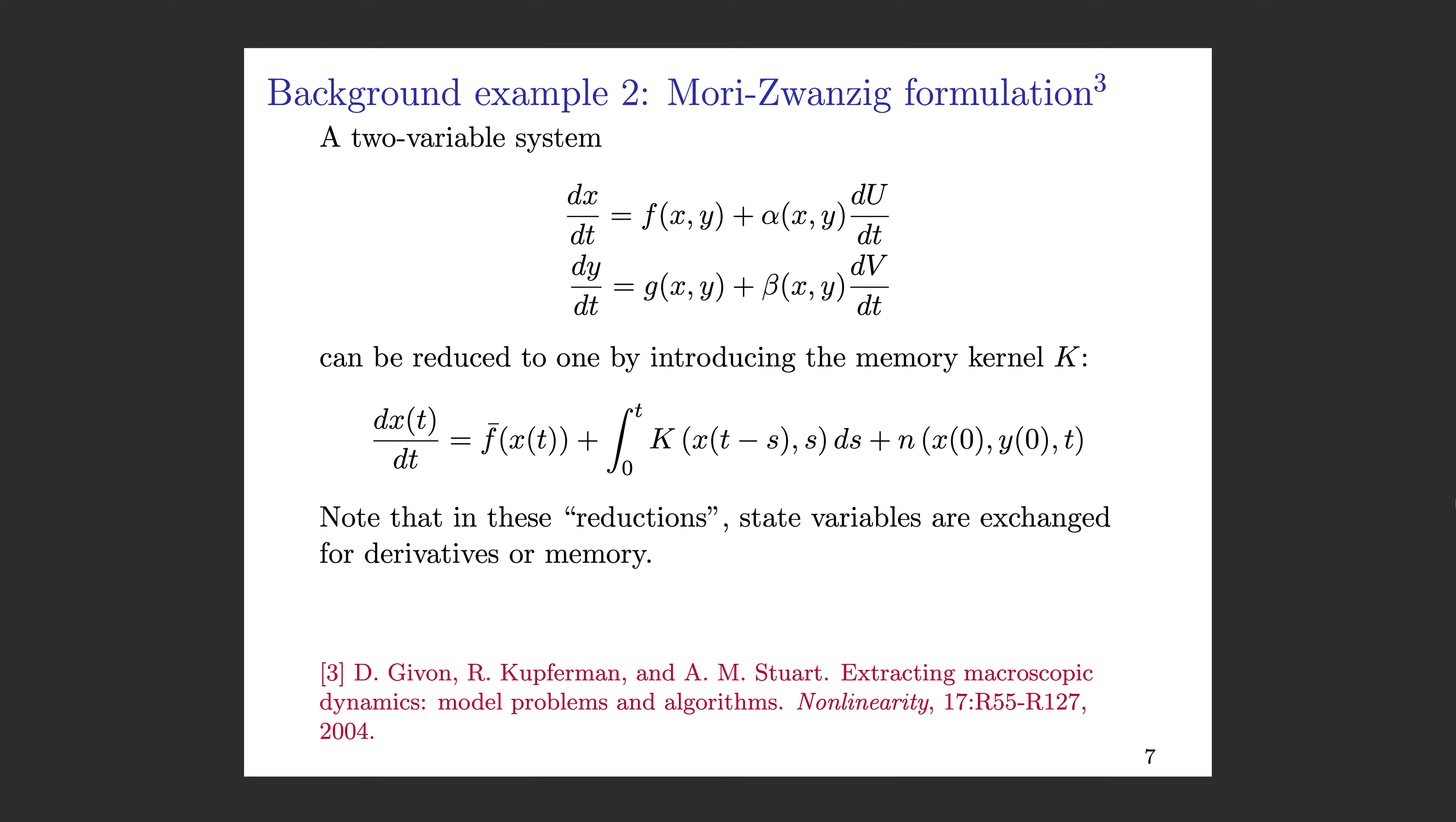The second example comes from the Mori-Zwanzig type formulation, taken from this paper by Givon, Kupferman, and Stuart in Nonlinearity. Here we have this two-variable system in x and y, and it's reduced to a single differential equation by introducing this memory kernel. We start with more variables and it gets converted to just a single equation, but we have to introduce more information about the variable we keep—in the previous slide, that was higher derivatives; in this example, it's memory, the time history of variable x.